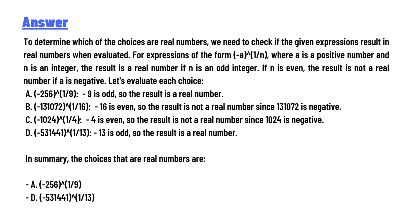To evaluate which expressions result in real numbers, for an expression of the form (-a)^(1/n), where a is a positive number and n is an integer: the result is a real number if n is an odd integer. If n is even, the result is not a real number when a is negative.